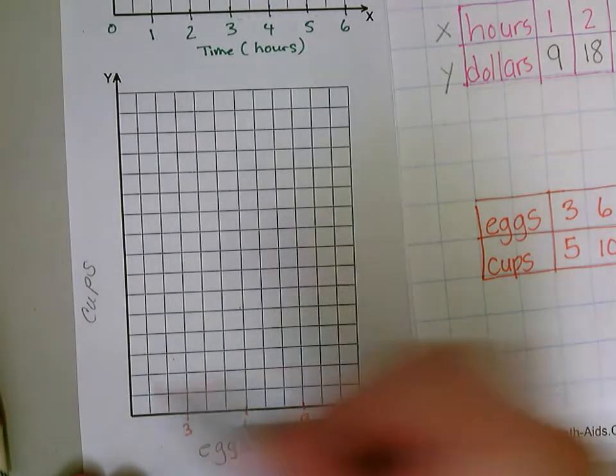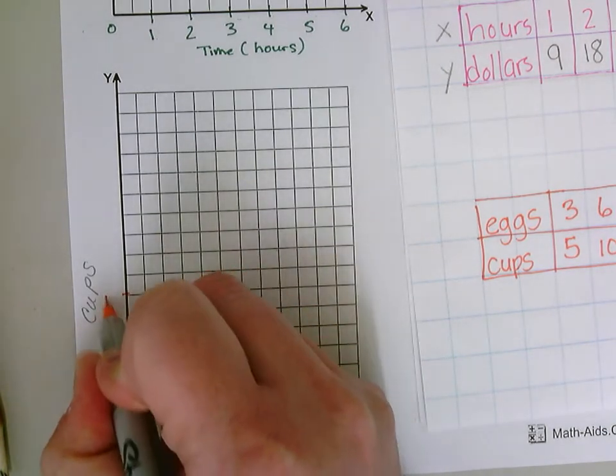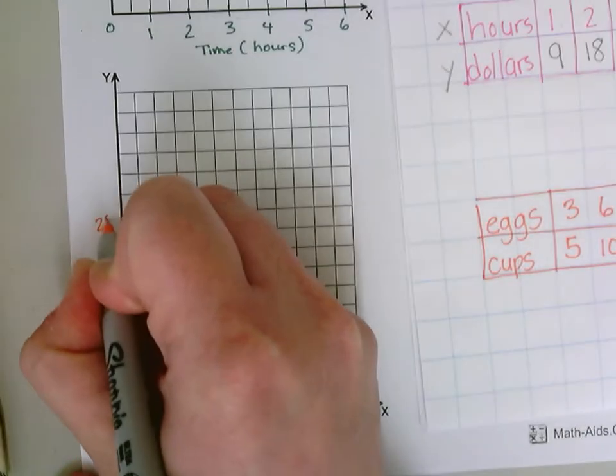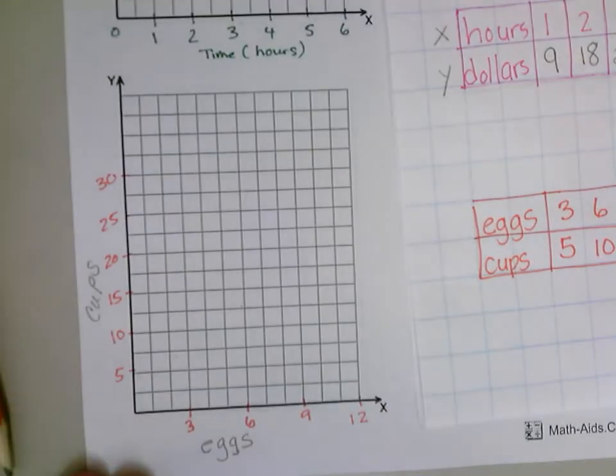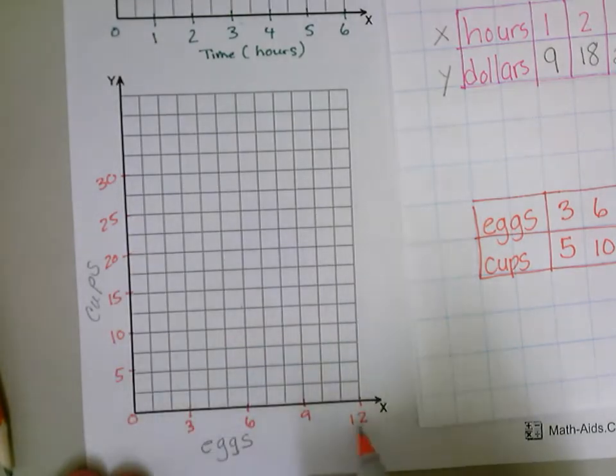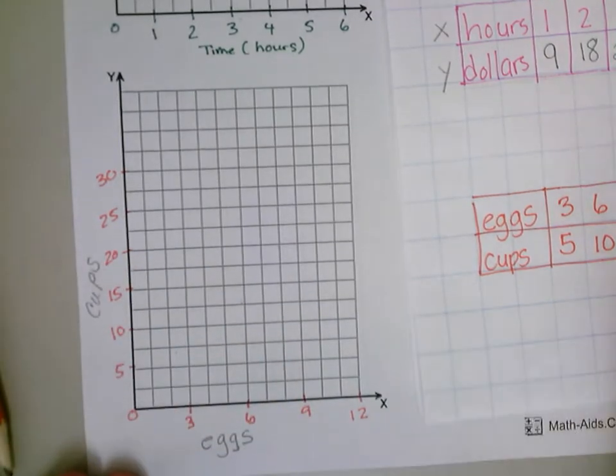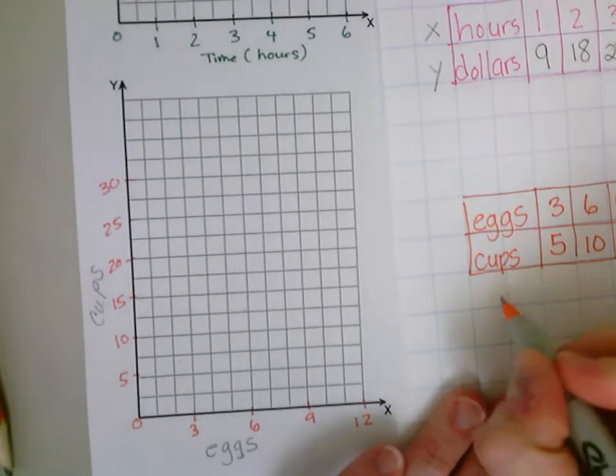Same thing moving up here. Cups five, so I could do five, ten, fifteen, twenty, twenty-five, thirty. I'm keeping them in equal spaces apart and my zero would be here. Now my two scales don't need to match. This is going by threes and this is going by fives. That's fine as long as the distance between each number is the same.